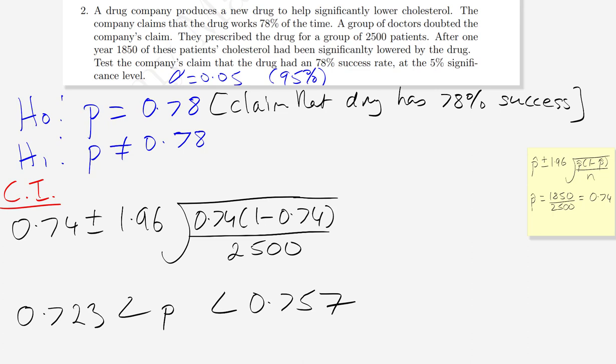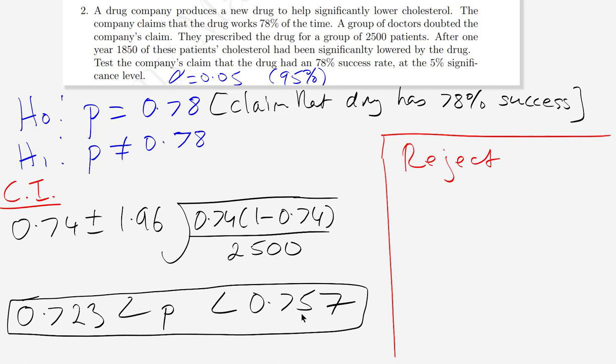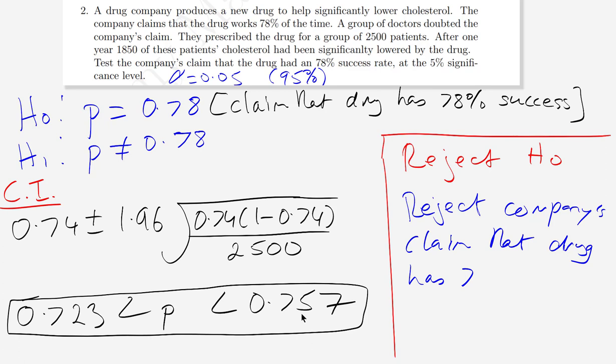The lower bound is 0.723 and the upper bound is 0.757. Based on the sample we expect the true proportion to be somewhere between 0.723 and 0.757 — we're 95% confident of that. Does 0.78 lie in that range? No, it does not. So once again we are rejecting the null hypothesis and therefore we reject the company's claim that the drug has a 78% success rate.